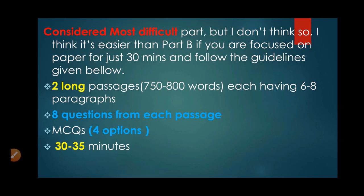The questions in OET reading part C are MCQ type. The difference with OET reading part B is that in part B you have three options to answer the MCQs, whereas in OET reading part C you will have four options. One option will be your answer, and one option will be totally wrong. Two options will be out of the text.